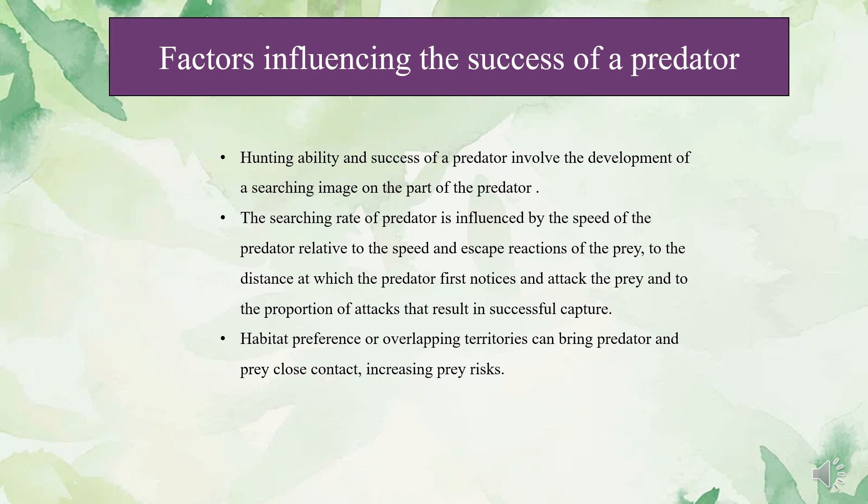Habitat preference or overlapping territories can bring predator and prey into close contact, increasing prey risk. For example, predatory rainbow trout in Paul Lake, British Columbia, move into the shallows where their prey, the red-sided stickleback, are most heavily concentrated.